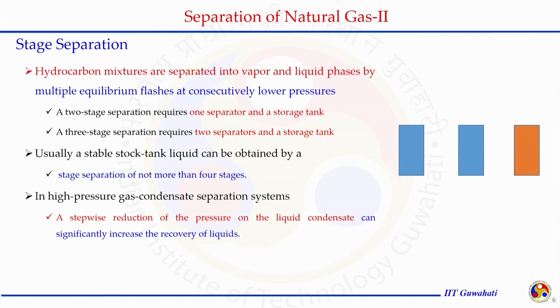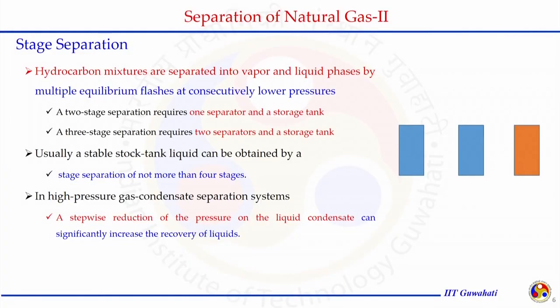A two-stage separation process requires just one separator and one storage tank. A three-stage separation requires two separators and a storage tank. The number of stages required is usually limited to 3 to 4. In the case of high-pressure gas condensate, stepwise reduction of pressure on the liquid condensate can significantly increase liquid recovery. Stage-wise separation provides several advantages.